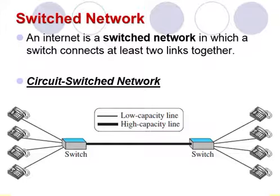An internet is a switch network in which a switch connects at least two links together. A switch needs to forward data from one network to another network when required. The two most common types of switch network are circuit switch and the packet switch.